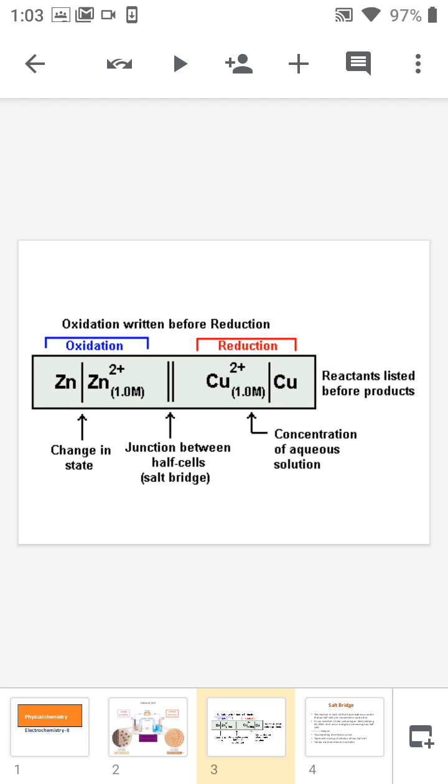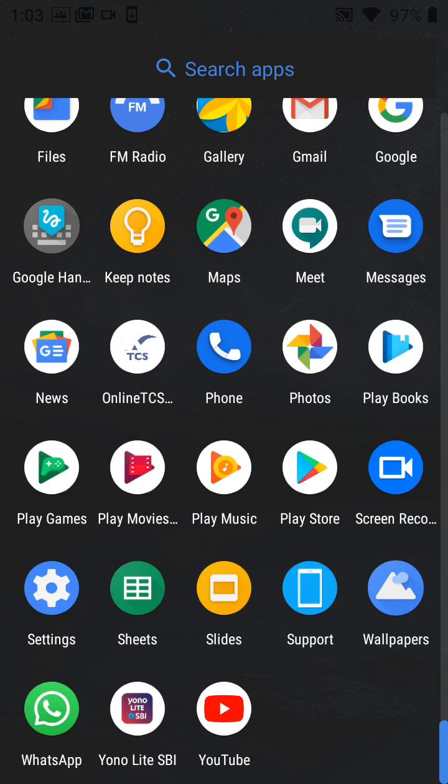But if you are representing a cell, we know that the cell consists of two half cells. One is anode and the other is the cathode.